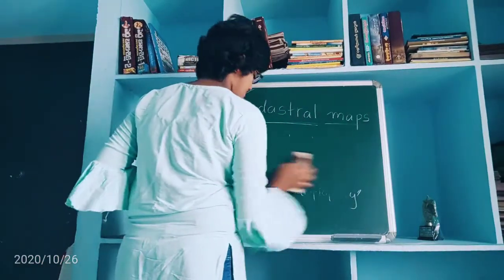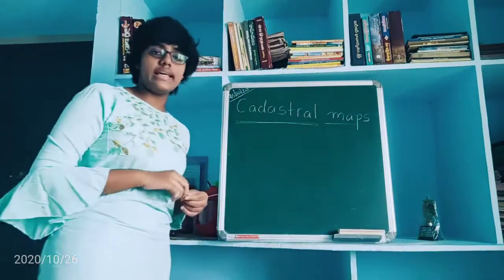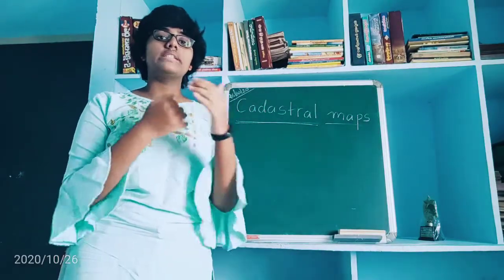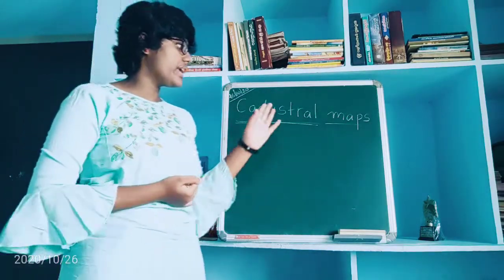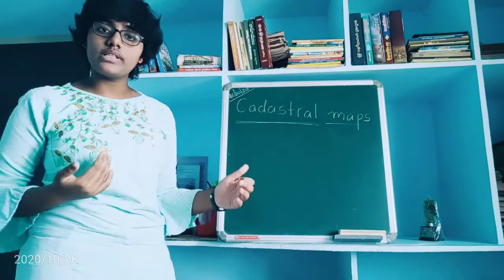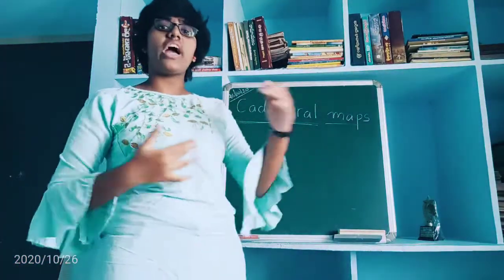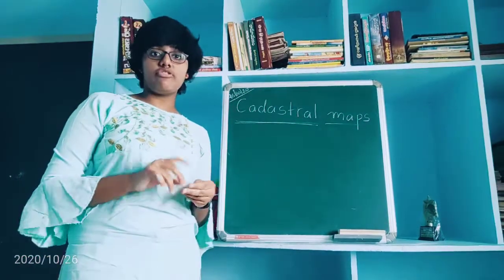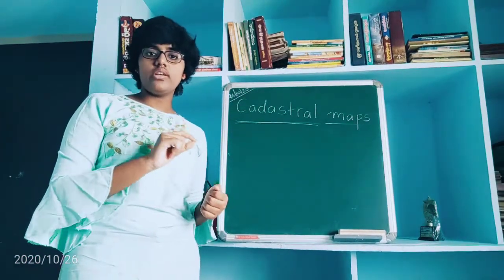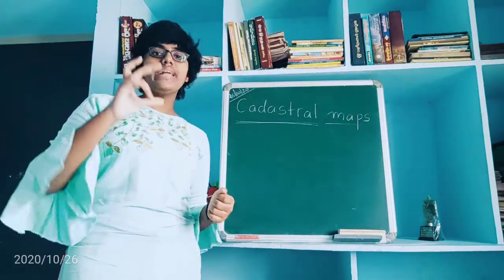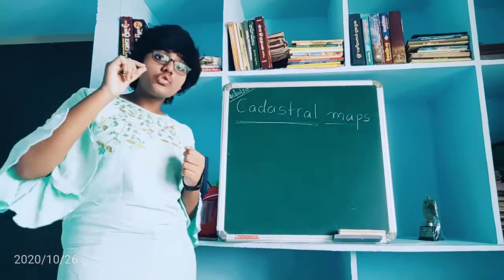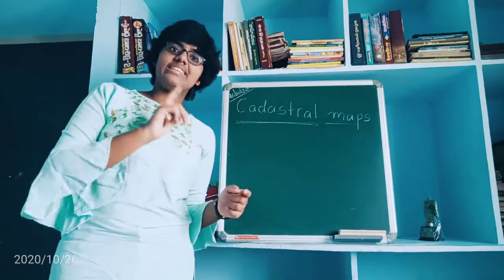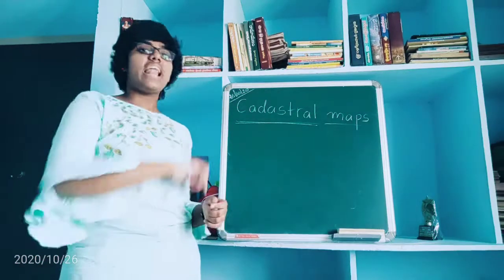Cadastral maps represent exact heights, the exact length of roads, and how much distance something is. For example, Google Maps is a good analogy: if you zoom out, you see a small scale view — only parts of India. If you zoom in, you see your area with many details — that is large scale. These are examples of small scale and large scale.